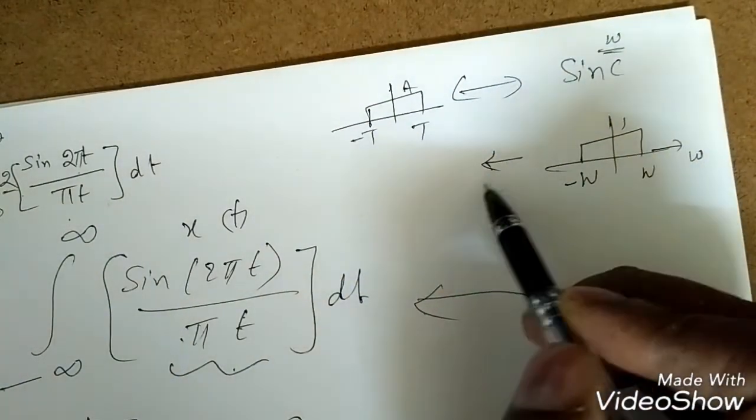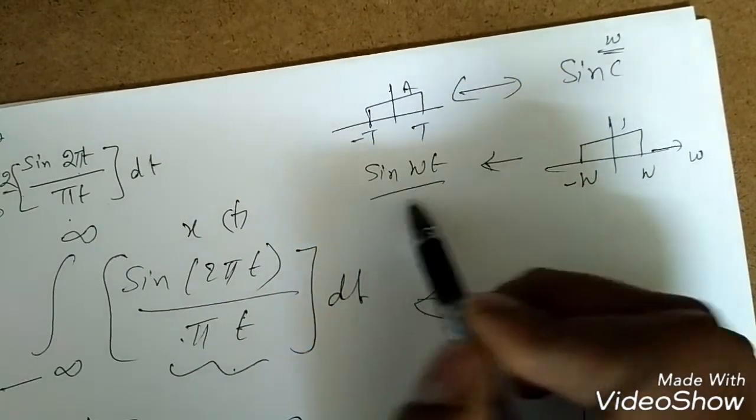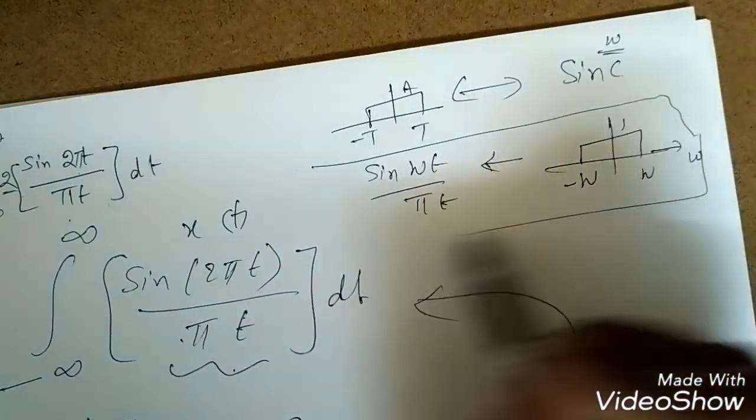Now the inverse Fourier transform will be sine(wt) by πt. This is the pair we need to use.